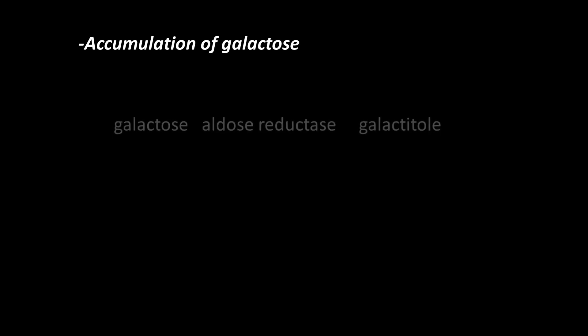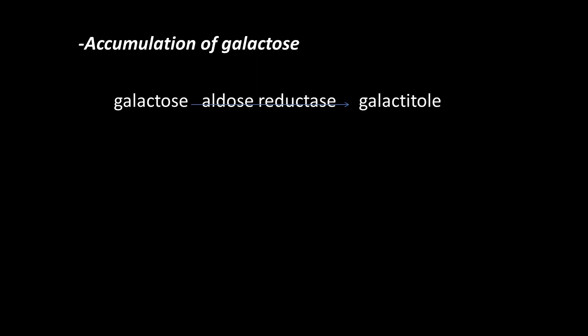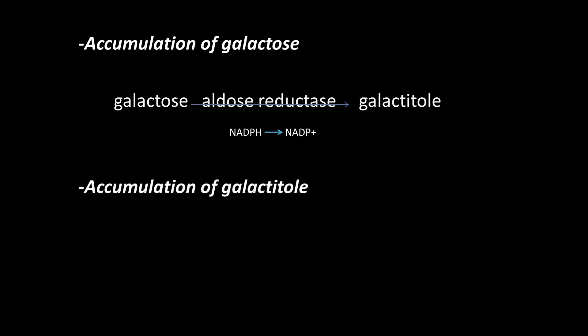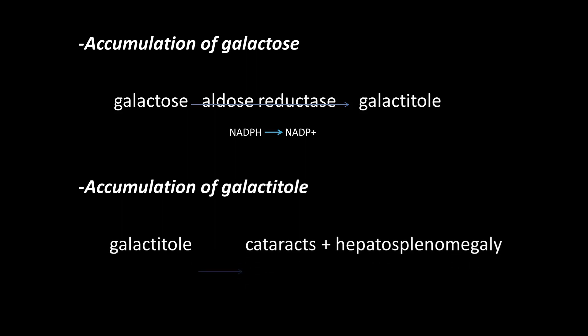Accumulation of galactose in tissues leads to its reduction to galactitol by the enzyme aldose reductase, with conversion of NADPH to NADP+. Accumulation of galactitol then leads to hepatomegaly and cataracts. In fact, any single deficient enzyme in this pathway can result in cataracts through the accumulation of galactitol in the lenses of the eyes.